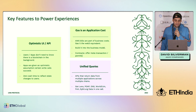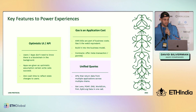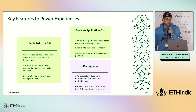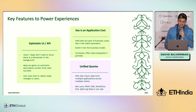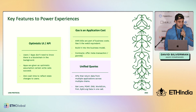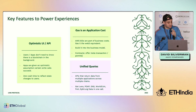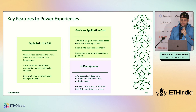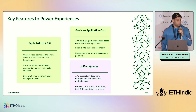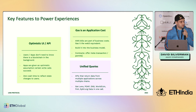Lastly, unified queries — APIs that return data from multiple applications across multiple chains. We've already integrated this into our profile function. With a singular call, you can get Lens, POOP, ENS, WorldCoin, POH, Sybil.org data, and more. Those contracts are on multiple different chains, including off-chain data, and that is something we want to expand on. For developers, you deserve contextual data regardless of where the source chain is. We hope to continue building on that path.